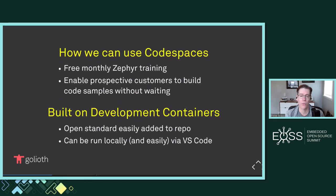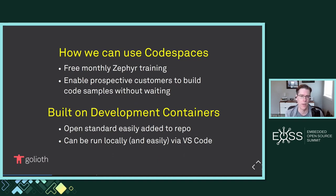Our most recent advancements have gotten us really close to a streamlined behavior that I'm going to demonstrate today. It relies on Codespaces, which is a Microsoft product — Codespaces is owned by GitHub, which is owned by Microsoft. It is free to use up to a certain amount: something like 120 core hours and 16 gigabytes of storage, which nobody gets close to in the three-hour training that we do.